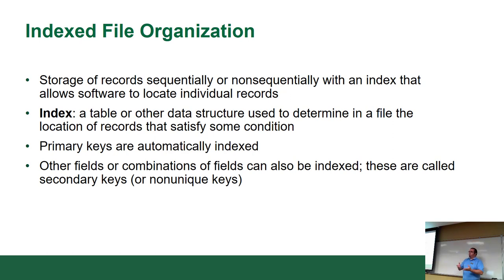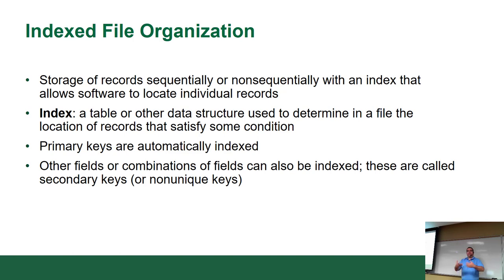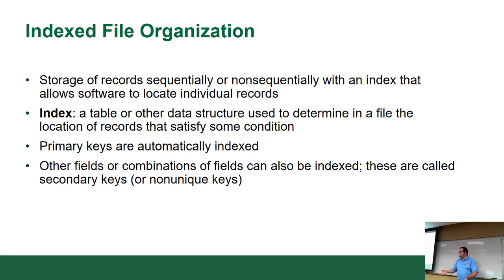You can actually create indexes with multiple fields — for example, indexing on phone number and postal code, or on last name and phone number. So if you always search for people by their last name and the last four digits of their phone number, that index would be used. These are called non-unique indexes because they're secondary indexes. The primary key index is a unique index because it must be unique.